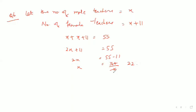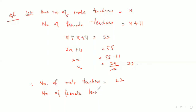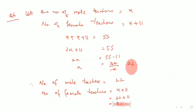Therefore, the number of male teachers is 22, and the number of female teachers is x plus 11, which equals 22 plus 11, giving 33. These are the answers.